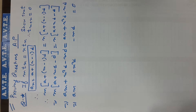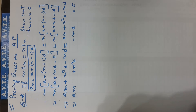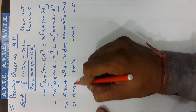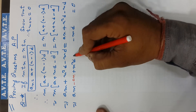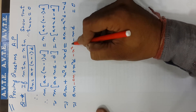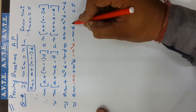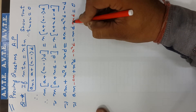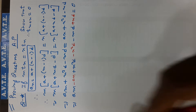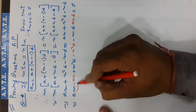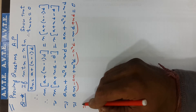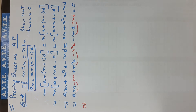Rearranging all terms to one side: am + m²d - md minus an minus n²d plus nd equals 0. I am going to do a little color variation to make it clearer. So we group the a terms and the d terms together.